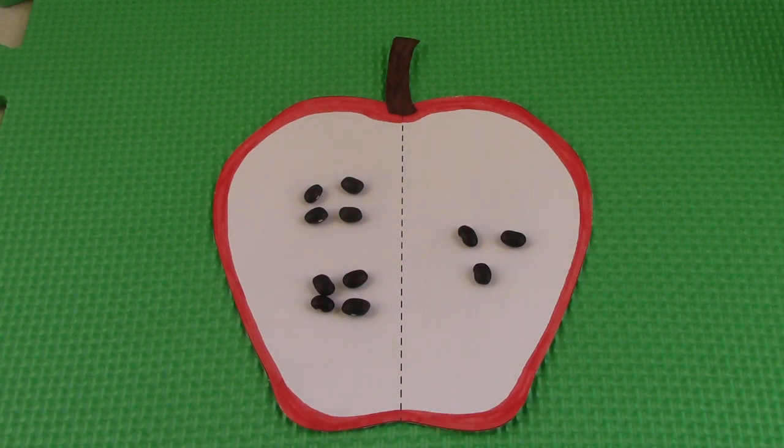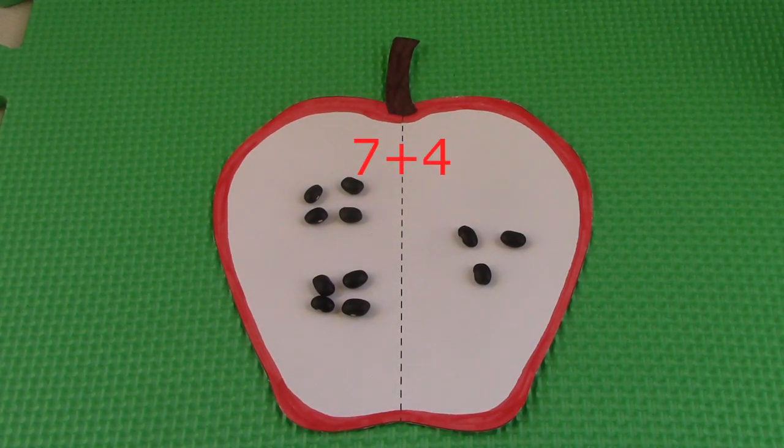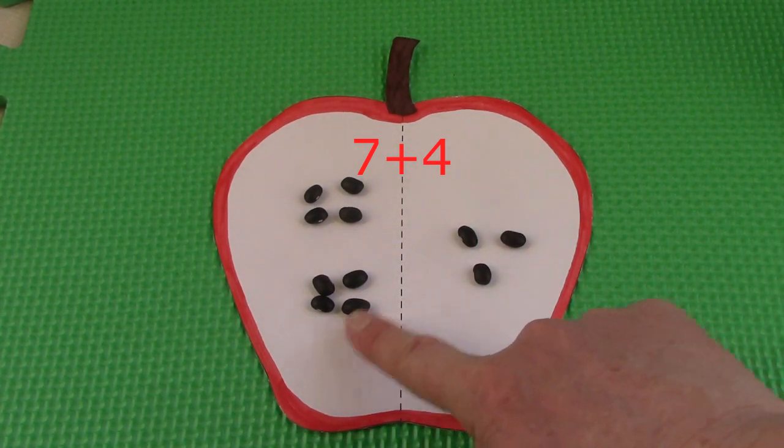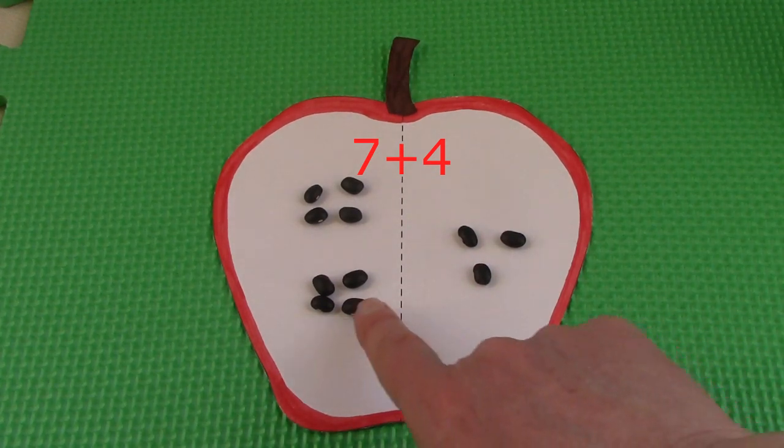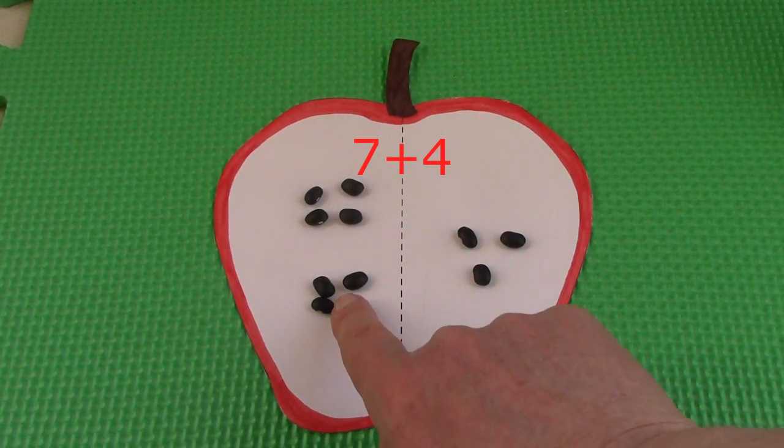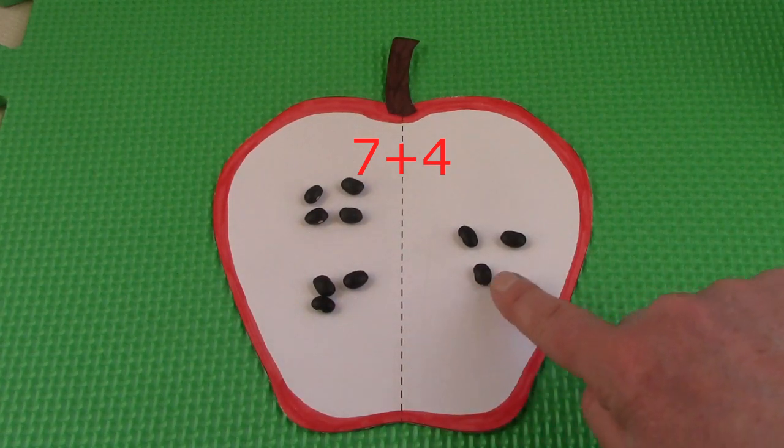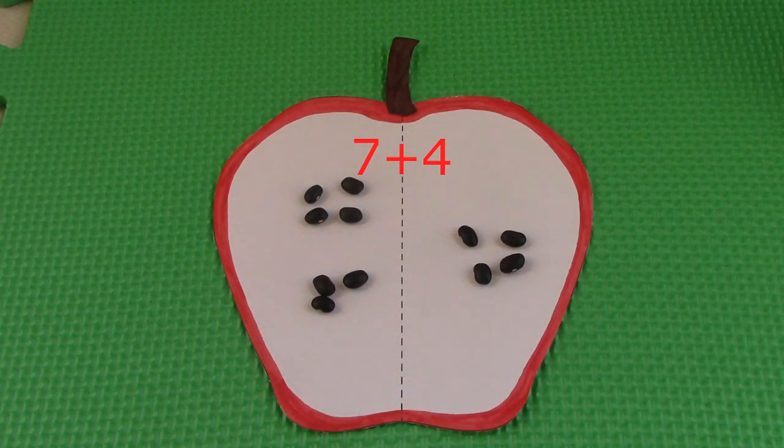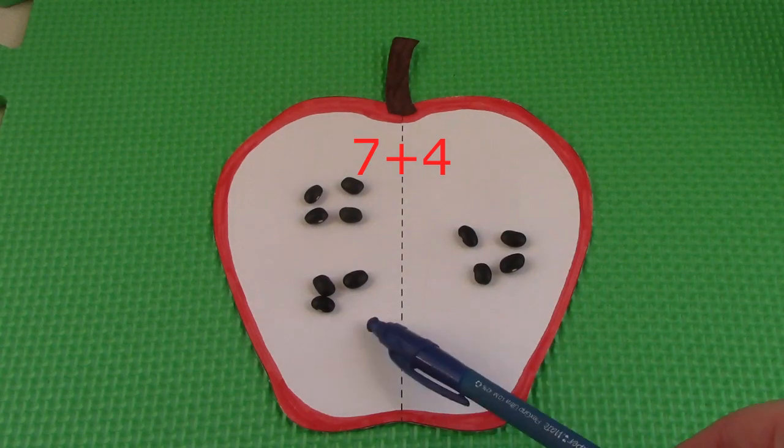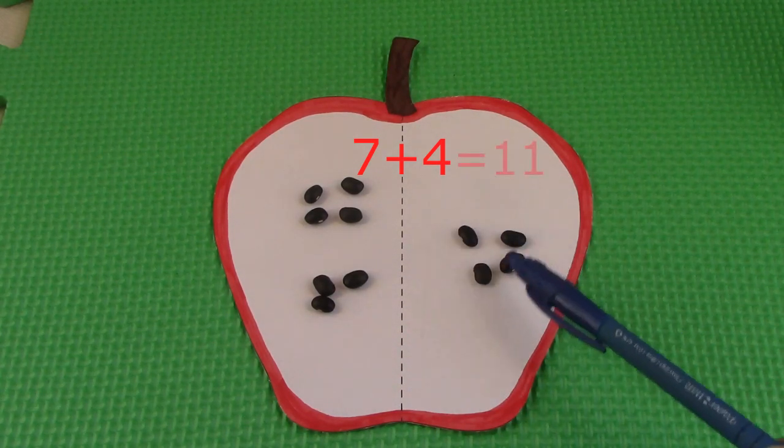One of the next facts that we have is 7 plus 4. That's related to 8 plus 3. Let's see how. If we have 8 plus 3 over here, and if that equals 11, what's going to happen if we move 1 of these over here? We have 7, 8, 9, 10, 11.